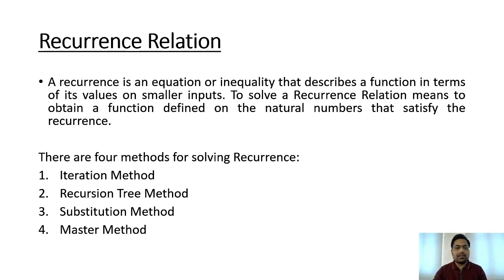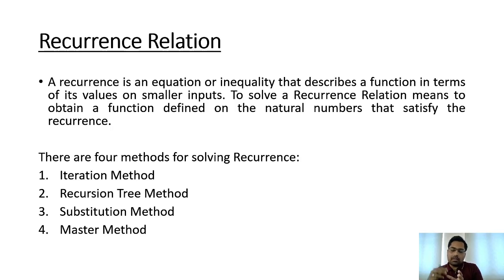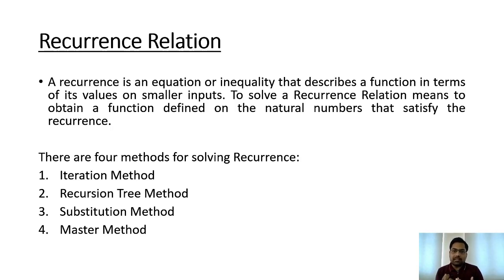The recurrence relation is a method — a mathematical equation which is derived from a recursive method. When recursion is used in code, we write a recurrence relation to find the time complexity of the program. We model the recursive function because we cannot directly say how many times it is running or how it is running.